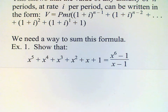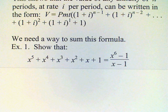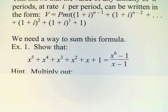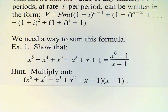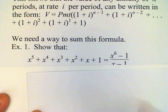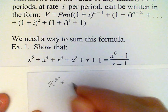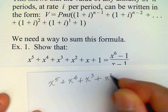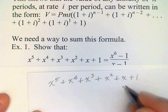Let's take a little digression and do an example from algebra. We want to show that x to the fifth plus x to the fourth plus x to the third plus x squared plus x plus one equals x to the sixth minus one, divided by x minus one. The hint in the notes says to multiply out these two quantities, so let's do that: multiply (x⁵ + x⁴ + x³ + x² + x + 1) by (x minus one).